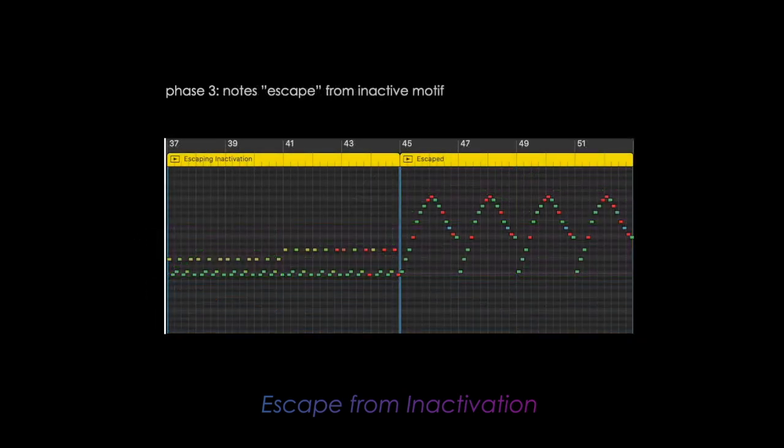Finally, in phase 3, we'll start to hear certain notes from the inactive motif escape inactivation. This is achieved by expressing these notes at a higher velocity, which is represented by the red colored notes. Here's how that will sound.